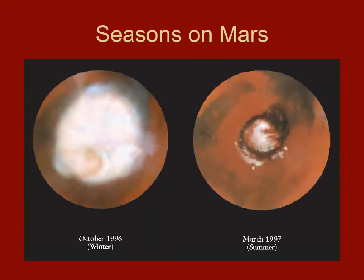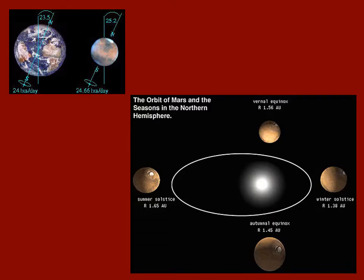Mars does have seasons because it's tilted, so you have ice caps that get bigger in wintertime and smaller in summertime. These images are pieced together from satellites orbiting Mars. However, Mars's orbit is vastly more elliptical than Earth's, which means the distance from the Sun also significantly affects the seasons.